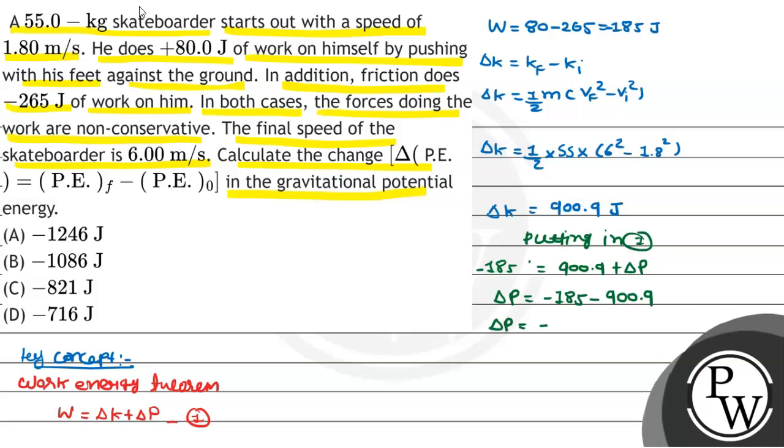So delta PE will be minus 1085 by 0.9 J, so we can say that change in potential energy is nearly equal to minus 1086 J. So in the options it is option B, Bacho. Our key concept led us to the correct answer, and the correct answer is option B. So I hope, Bacho, you all understood it well. Best of luck.